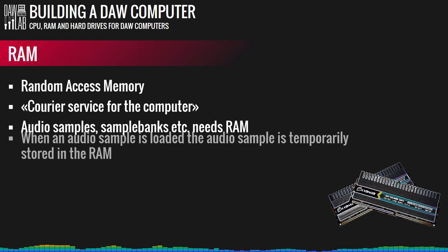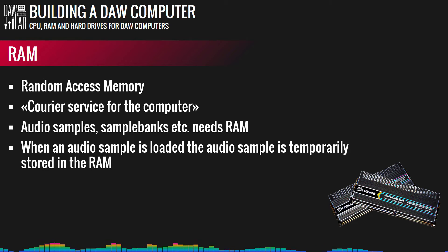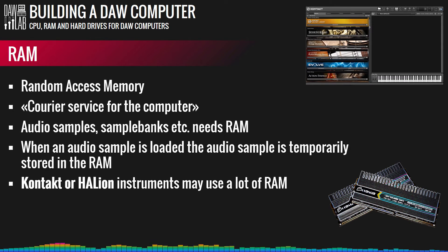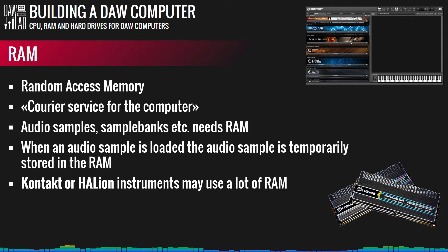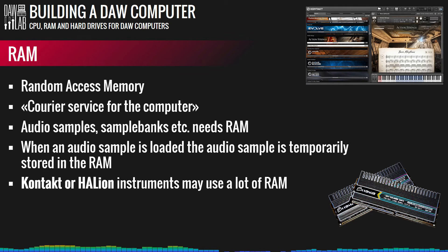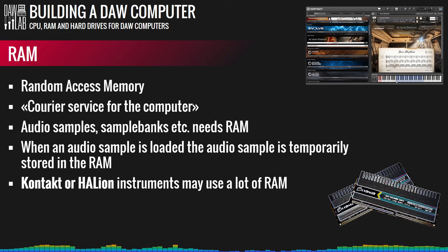Whenever an audio sample is loaded into music software, it's temporarily stored in RAM, making it faster to access next time. A good example is Native Instruments Kontakt — when you load an instrument library, most samples are stored in RAM to achieve smooth playback without latency. A slow RAM means longer load times; a fast RAM means the instrument loads up faster.